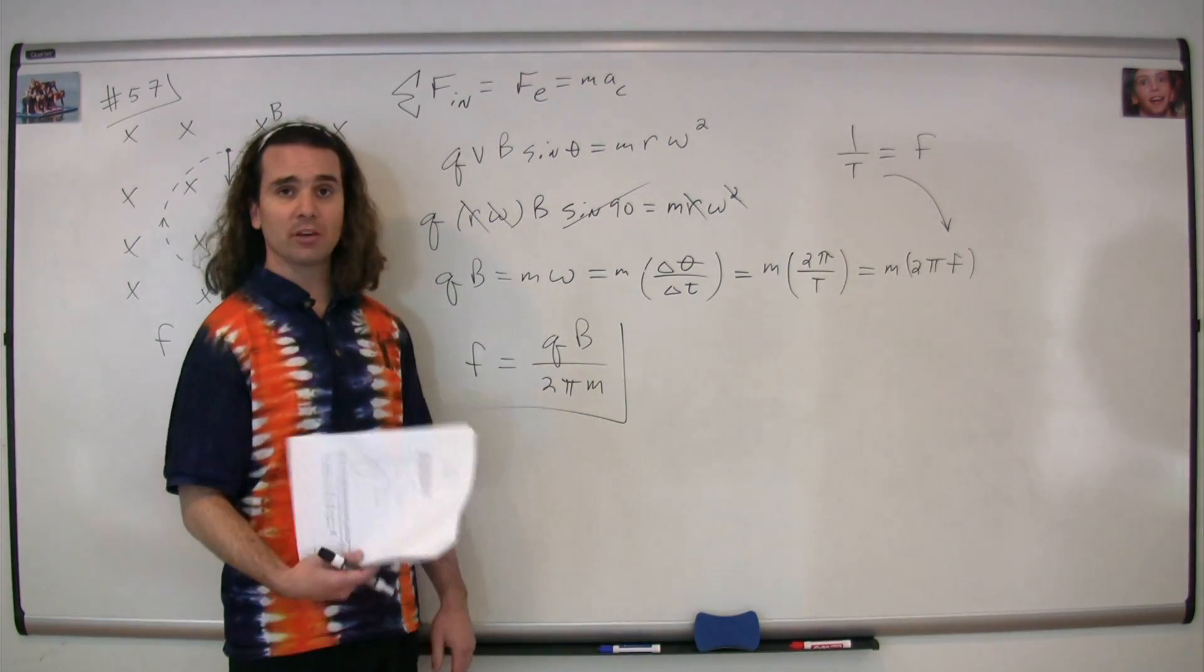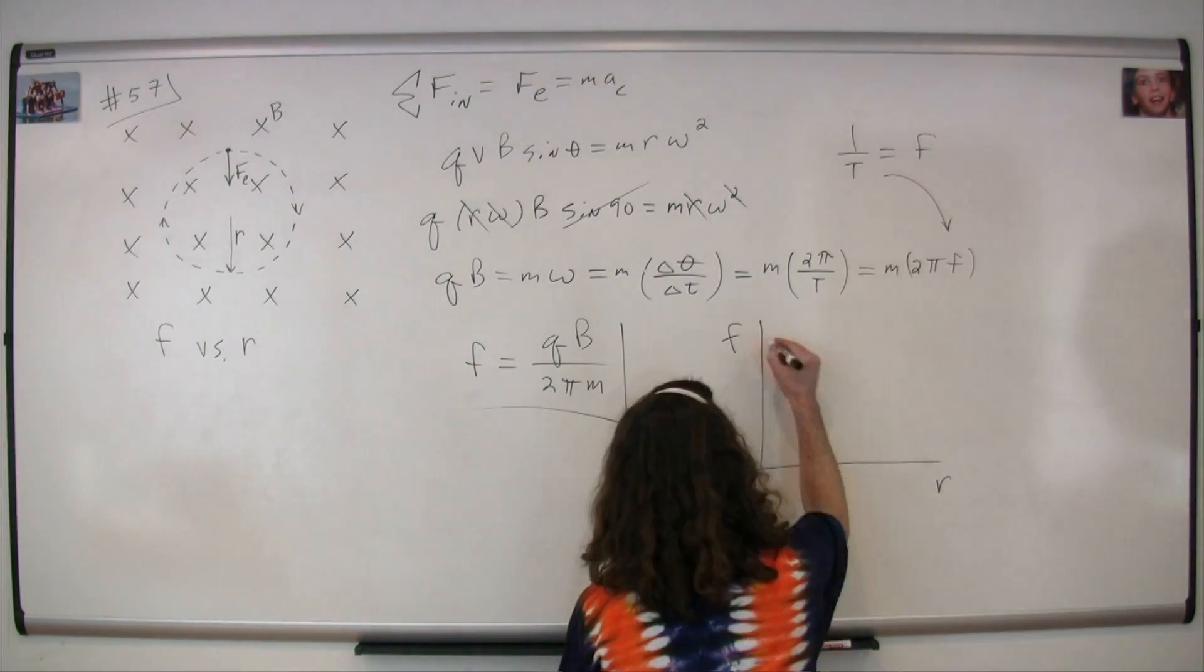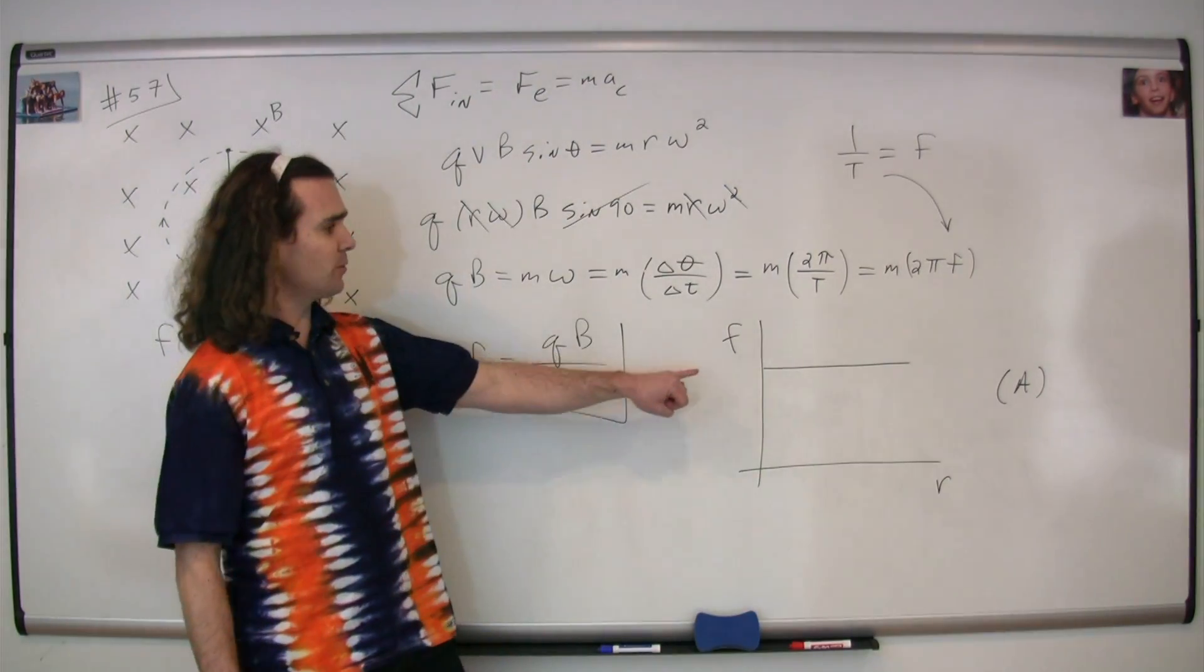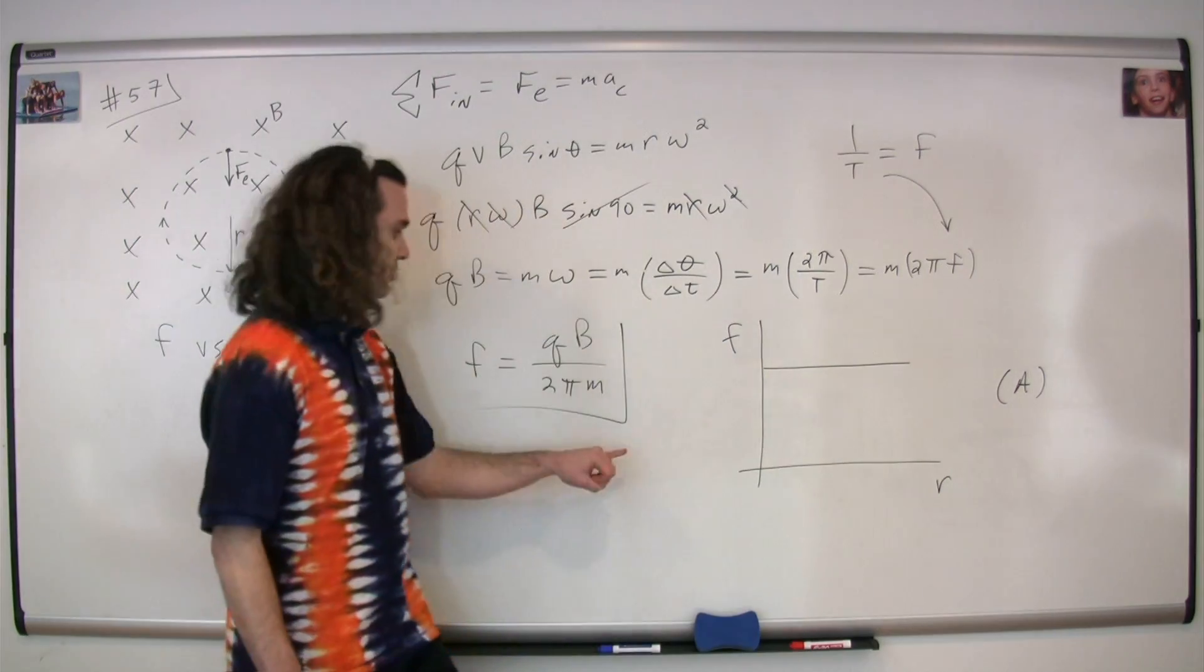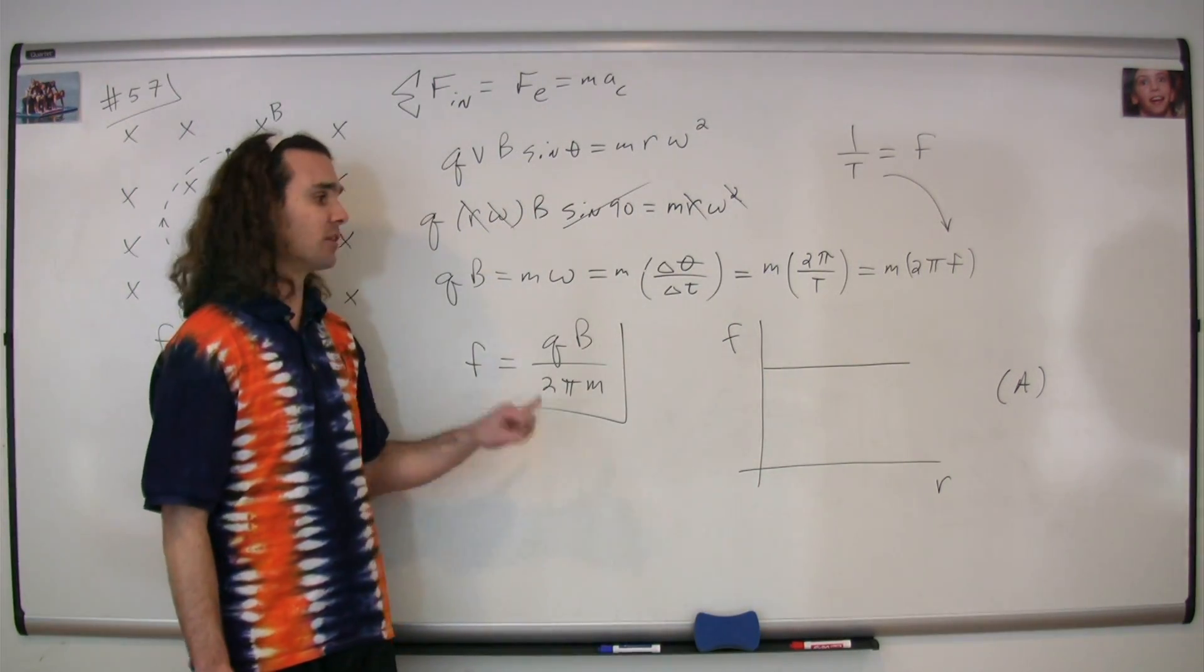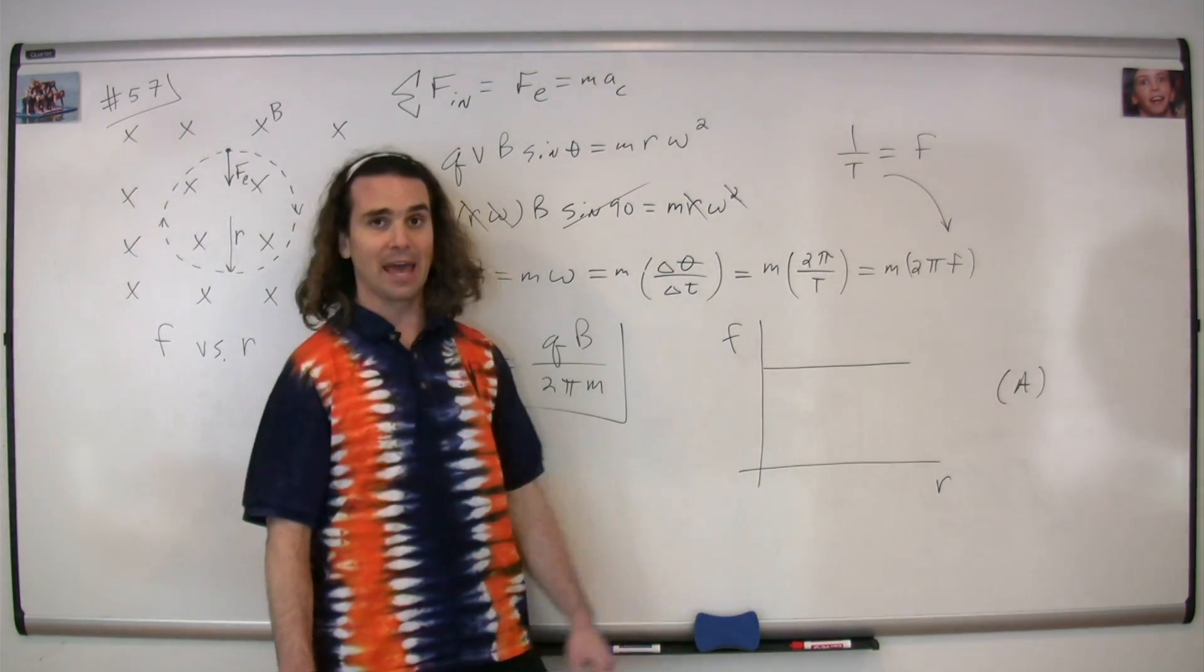There's only one of the graphs that matches that. This graph shows that the frequency is constant no matter what the radius is, which is exactly what we got in our equation. Therefore, the correct answer is A. That's right.